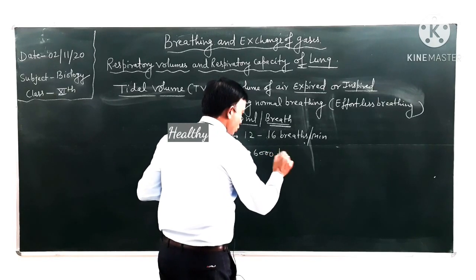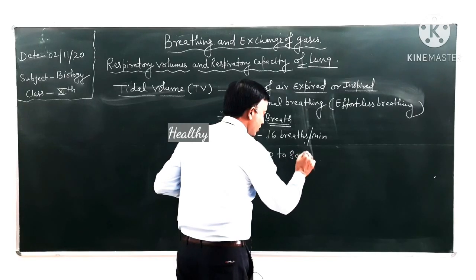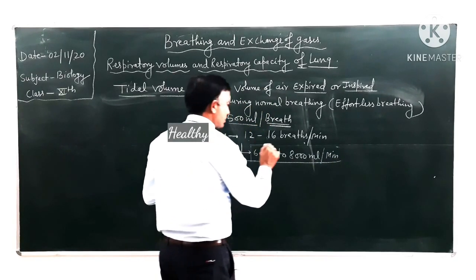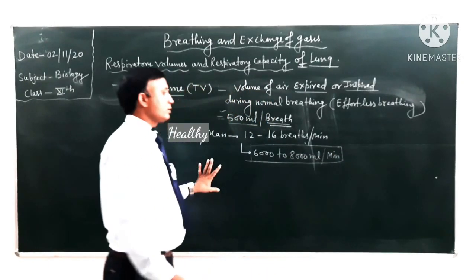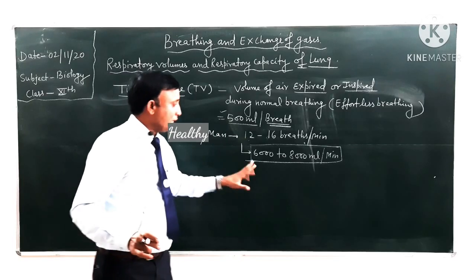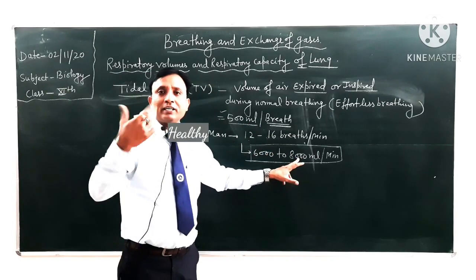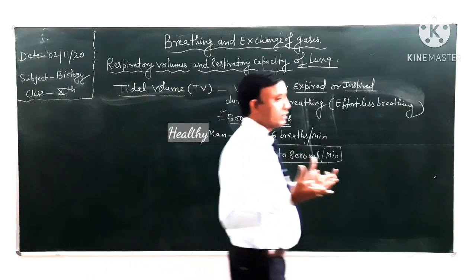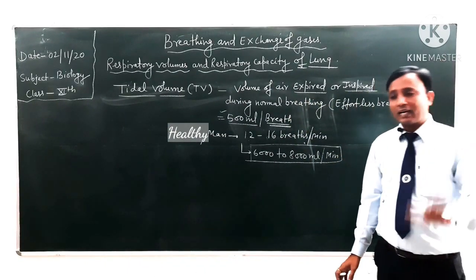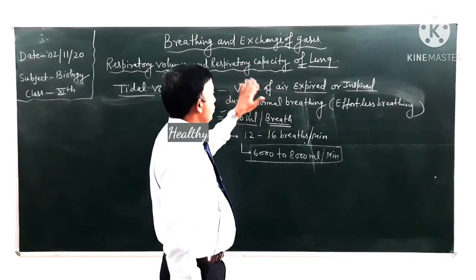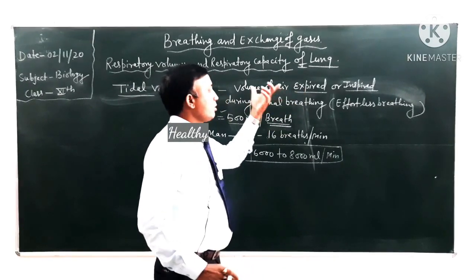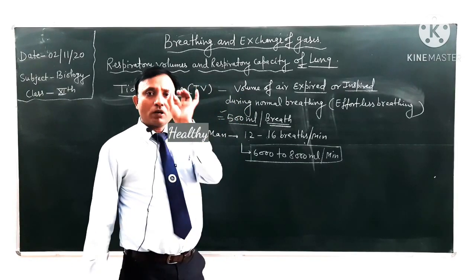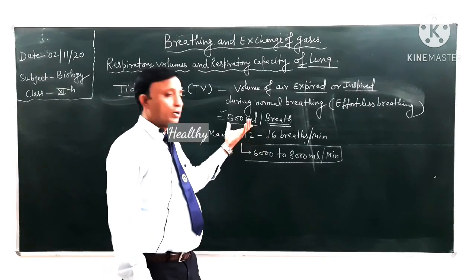If we calculate the total volume of air expired and inspired per minute: 500 ml per breath multiplied by 12 to 16 breaths gives approximately 6,000 to 8,000 ml per minute. That means the average breathing of any healthy man per minute is near about 6 to 8 liters — this is the normal breathing volume.